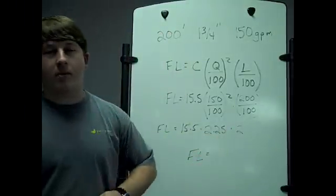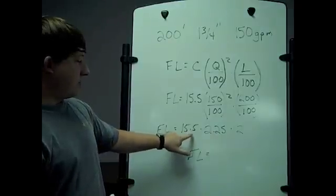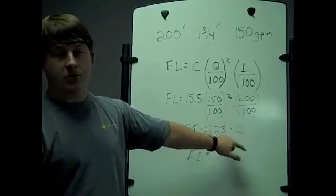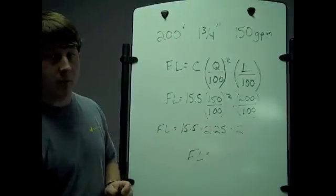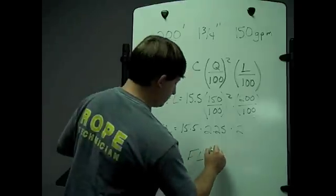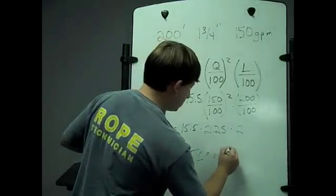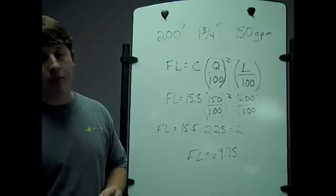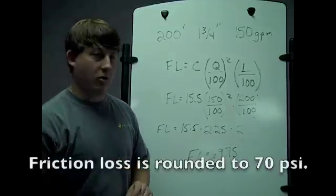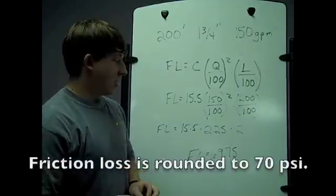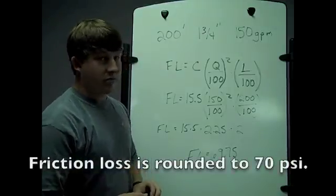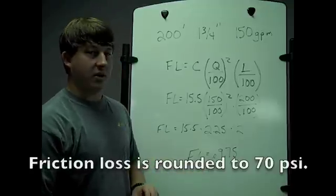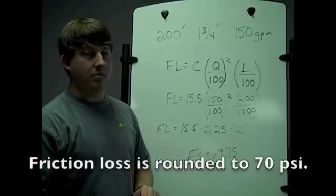So I multiply 15.5 times 2.25 times 2, and I get 69.75. For friction loss purposes, we round that up to 70 PSI. That means we have 35 PSI friction loss per 100 feet of hose, equaling 70 PSI total for 200 feet.